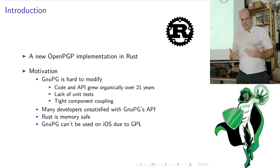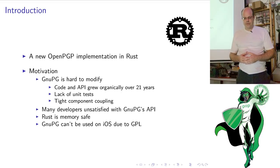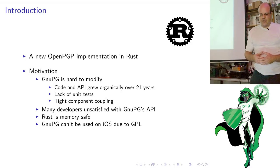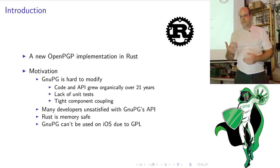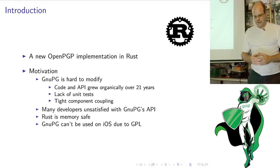Rust is memory safe, and that's super important if you're going to do parsing — particularly in a security-sensitive context. Another motivating factor is that GnuPG can't be used on iOS due to it being under the GPL, which is unfortunate but the current state of the world.